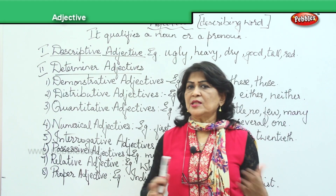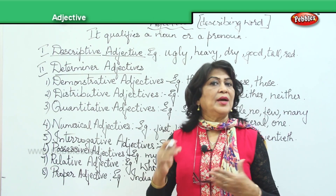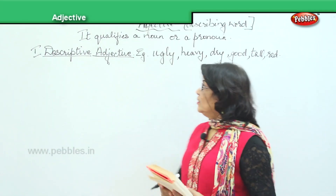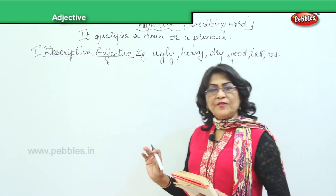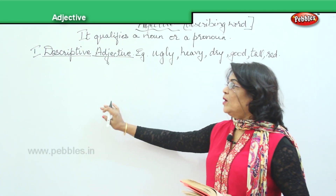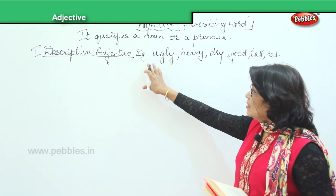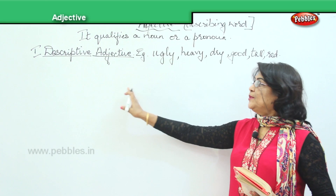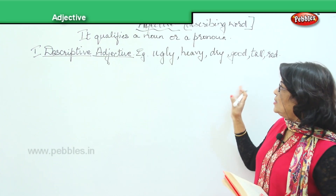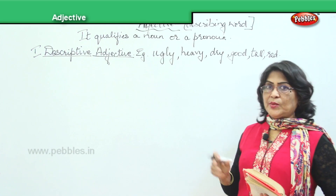Now I'm sure you have understood the different kinds of adjectives. I'm going to give you some exercises to identify all these adjectives. We saw the first kind as descriptive adjective and the second as determiner adjectives. Most of these adjectives under descriptive are descriptive in nature.